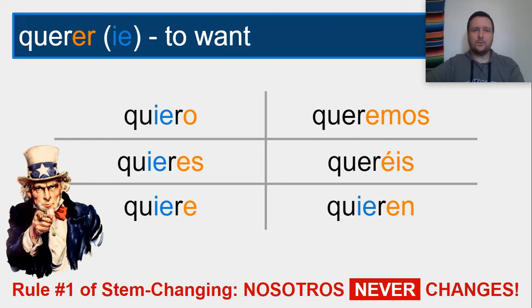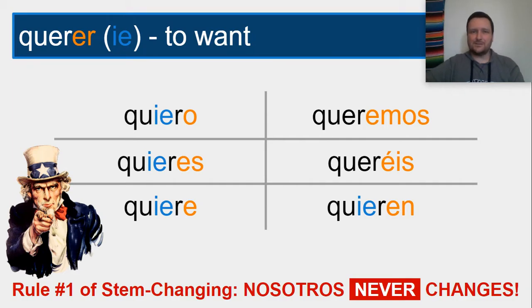We use the regular ER verb endings, and we also apply rule number one: NOSOTROS doesn't change — queremos. And VOSOTROS does whatever NOSOTROS does.